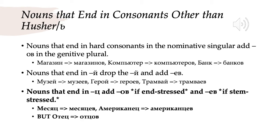Now let's look at nouns that end in consonants other than a husher or a soft sign. These are all going to be masculine nouns. If they end in a hard consonant in the nominative singular, we're going to add -ов in the genitive plural. So магазин becomes магазинов. Note that we write -ов, but because the -в is in word-final position, we pronounce it -оф. Компьютер becomes компьютеров; банк becomes банков. If the noun ends in й (краткое), we're going to drop the й and add -ев — written -ев, but pronounced -еф in word-final position. So музей, museum, becomes музеев; герой, hero, becomes героев; трамвай, tram, becomes трамваев.